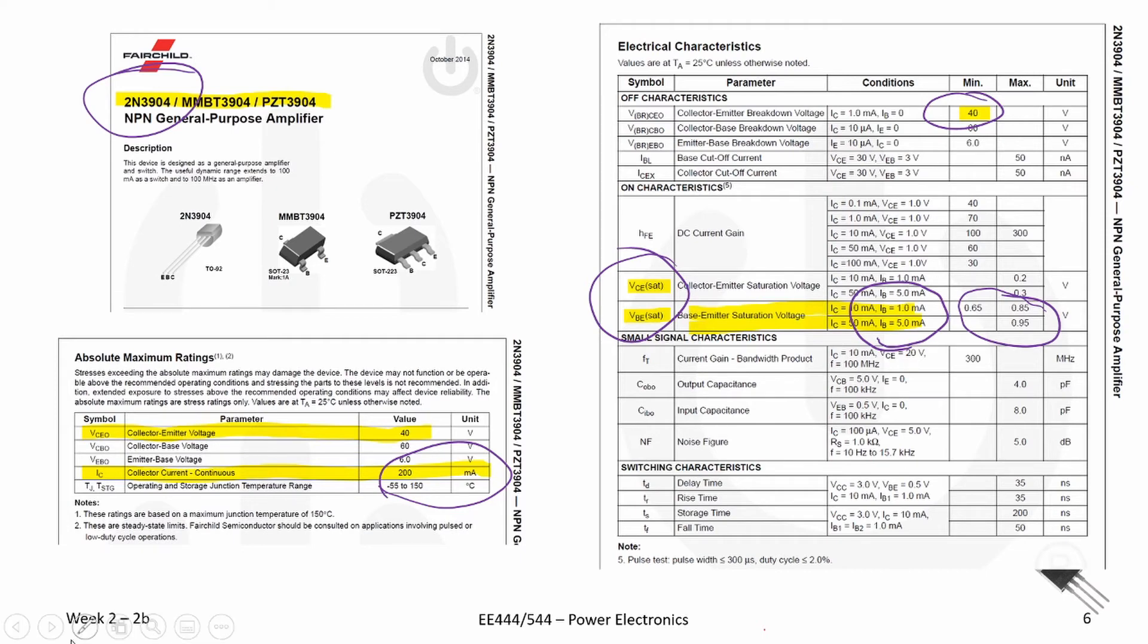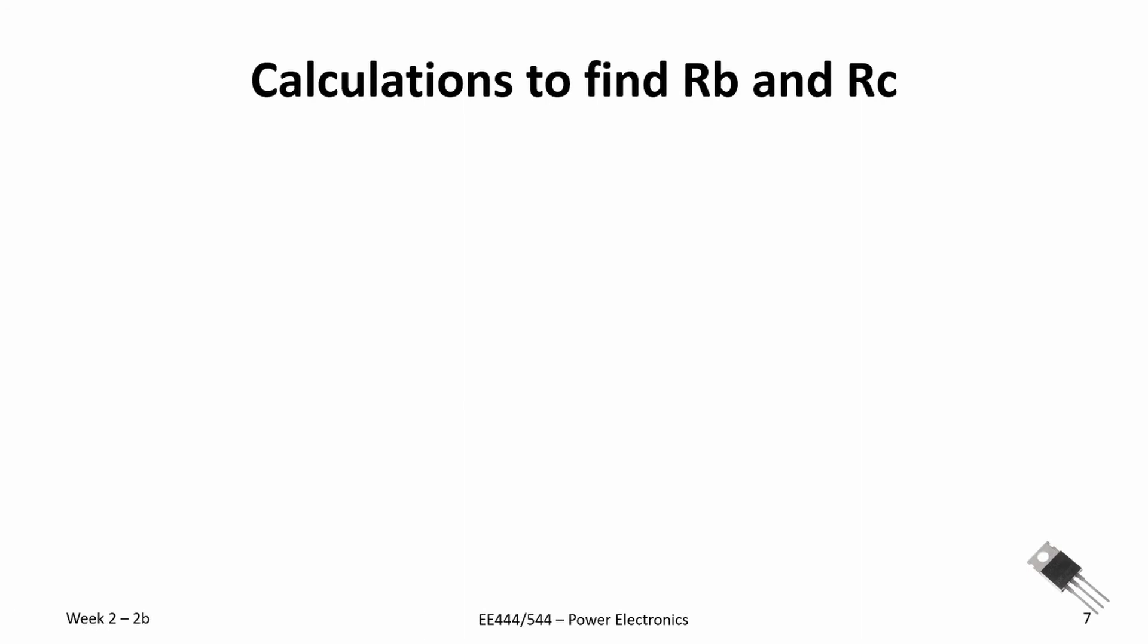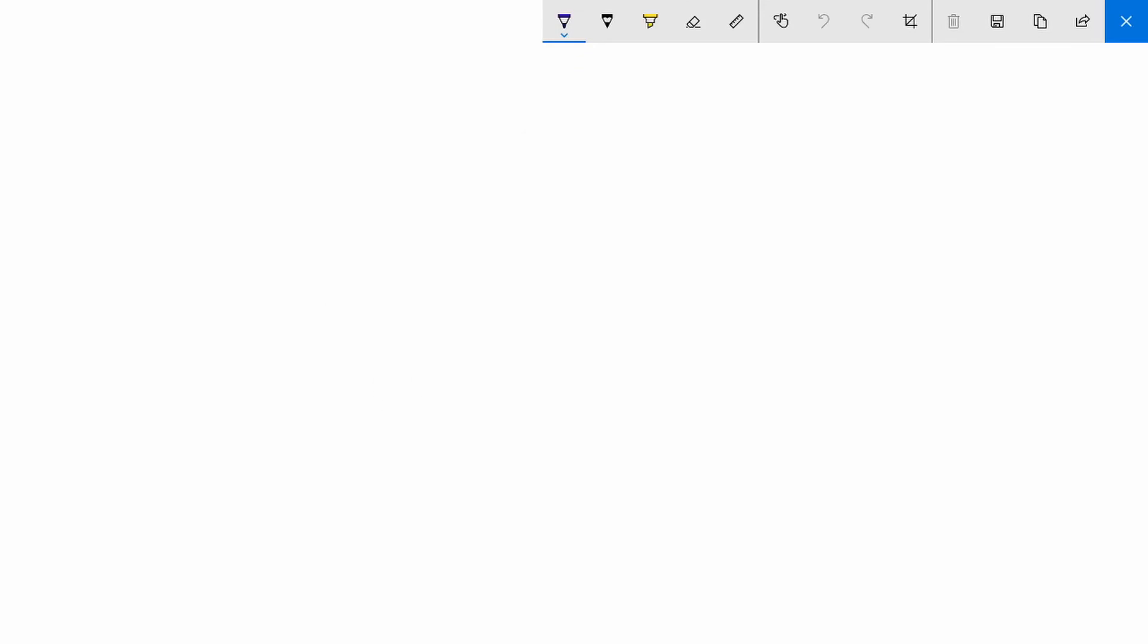Now let's do some calculations. I'm going to bring up the whiteboard and we'll do our calculations there. Recall that the base to emitter voltage drop was about 0.7 volts. I'm going to assume 0.8. I really want this device to be into saturation.